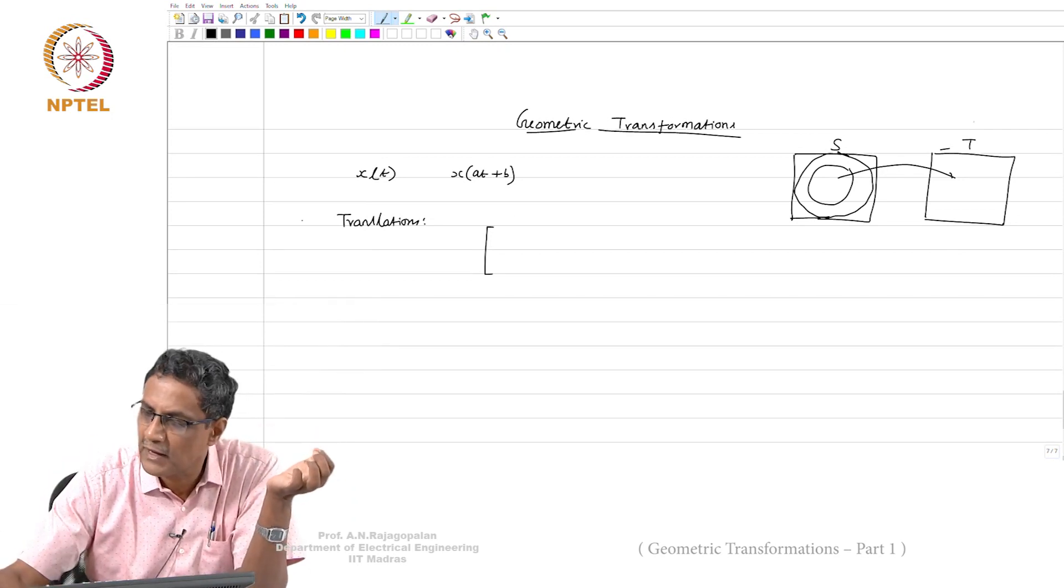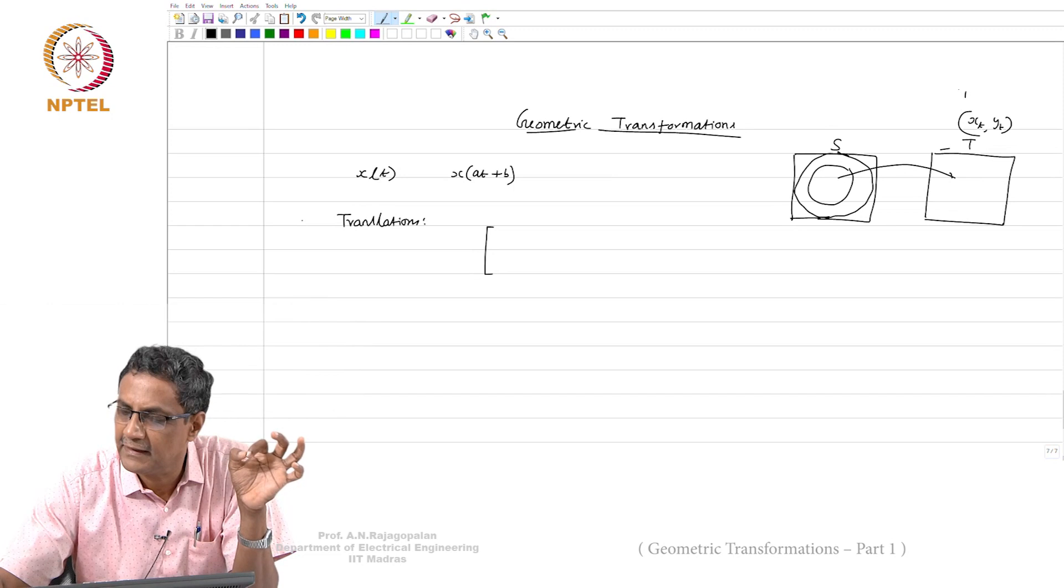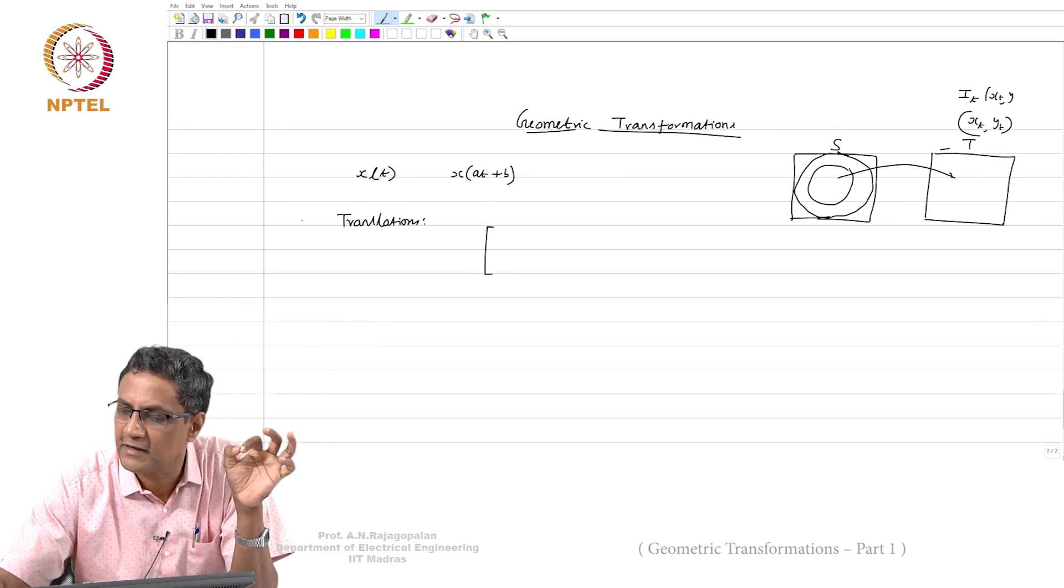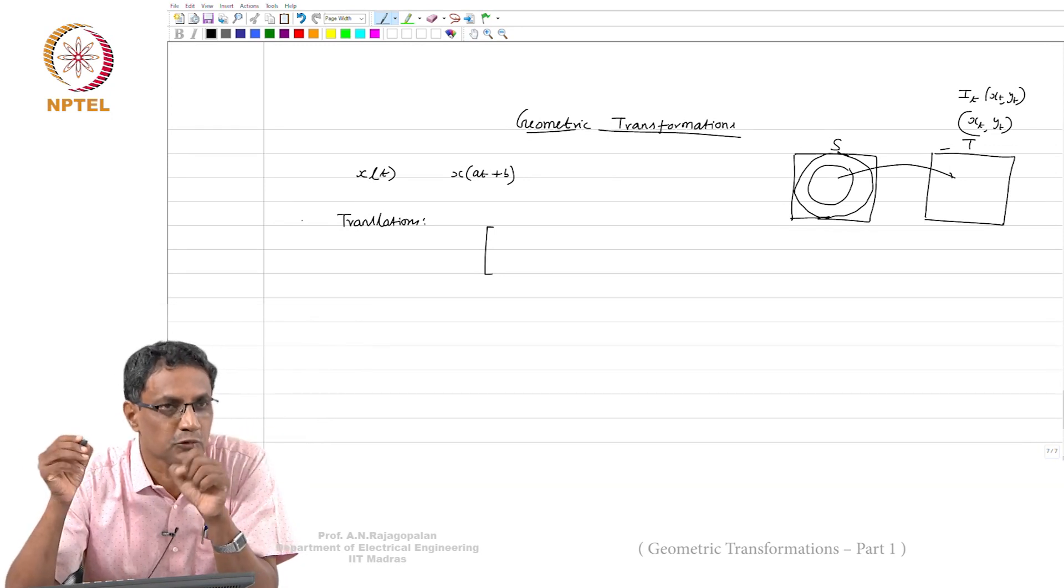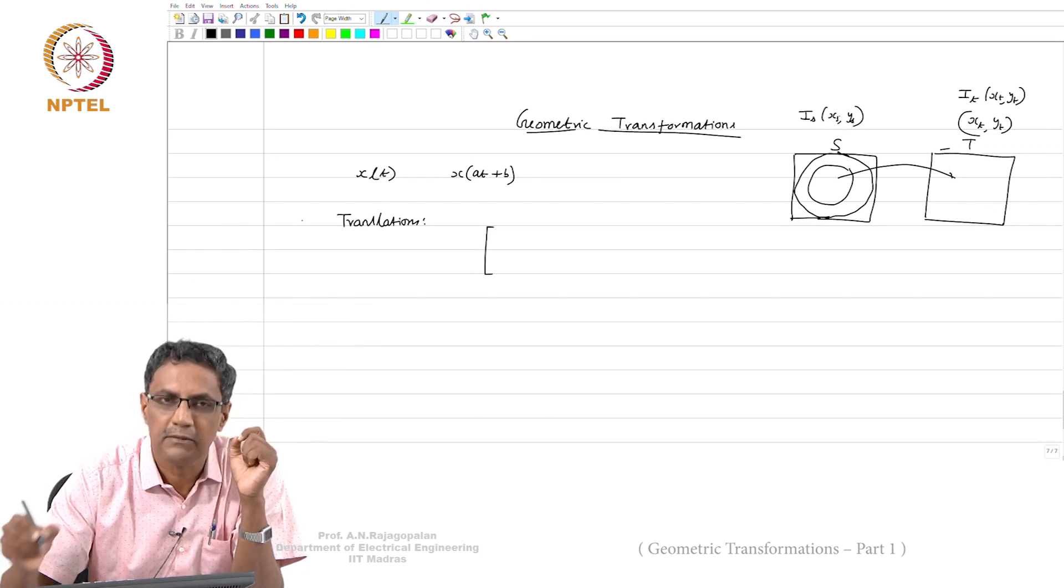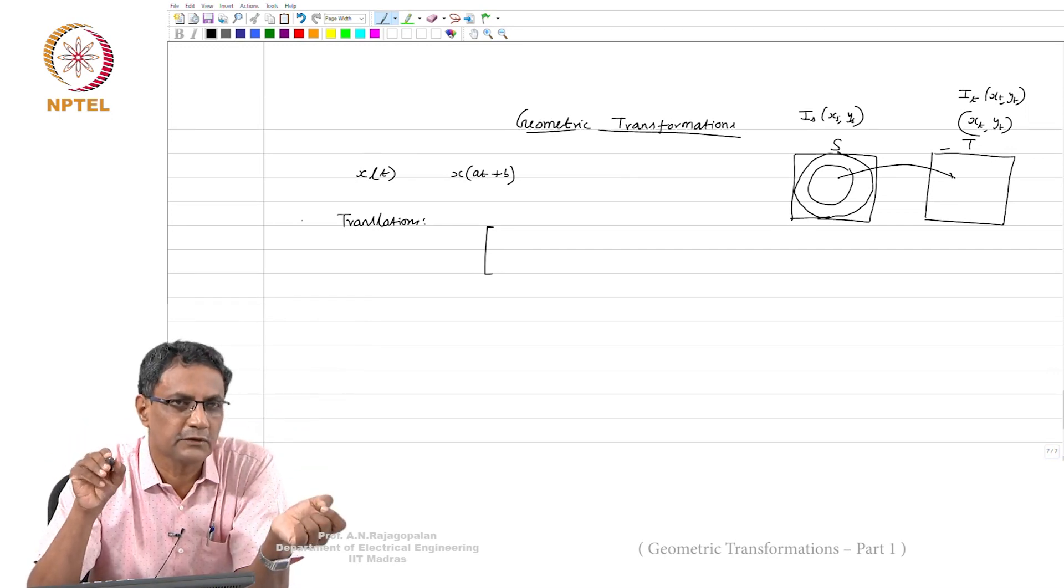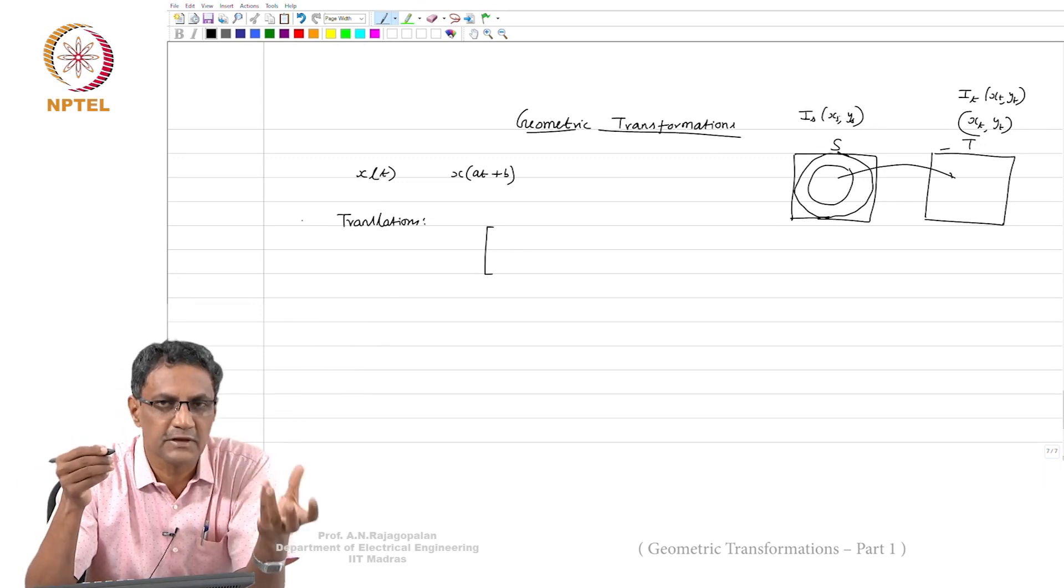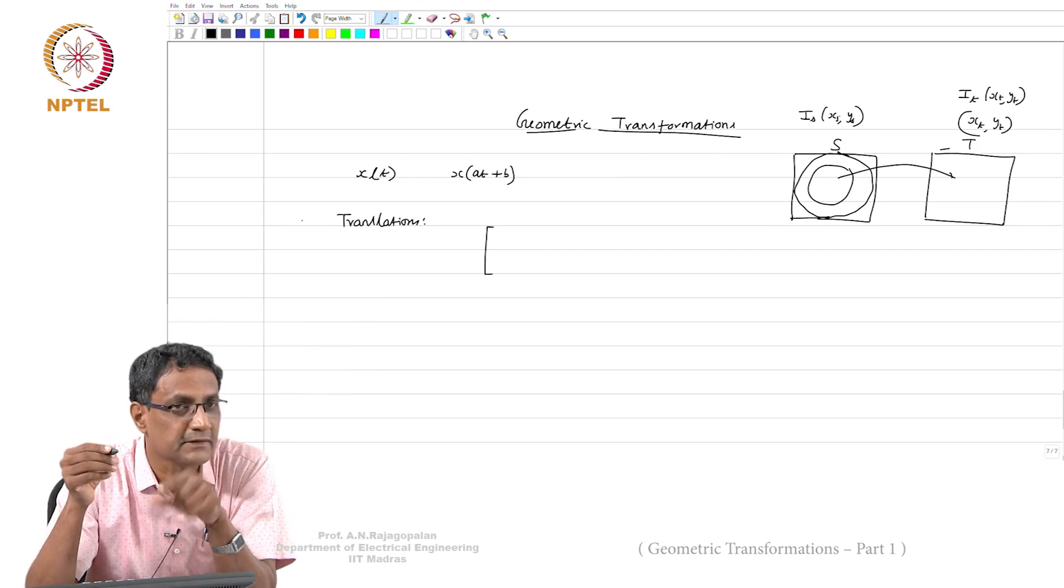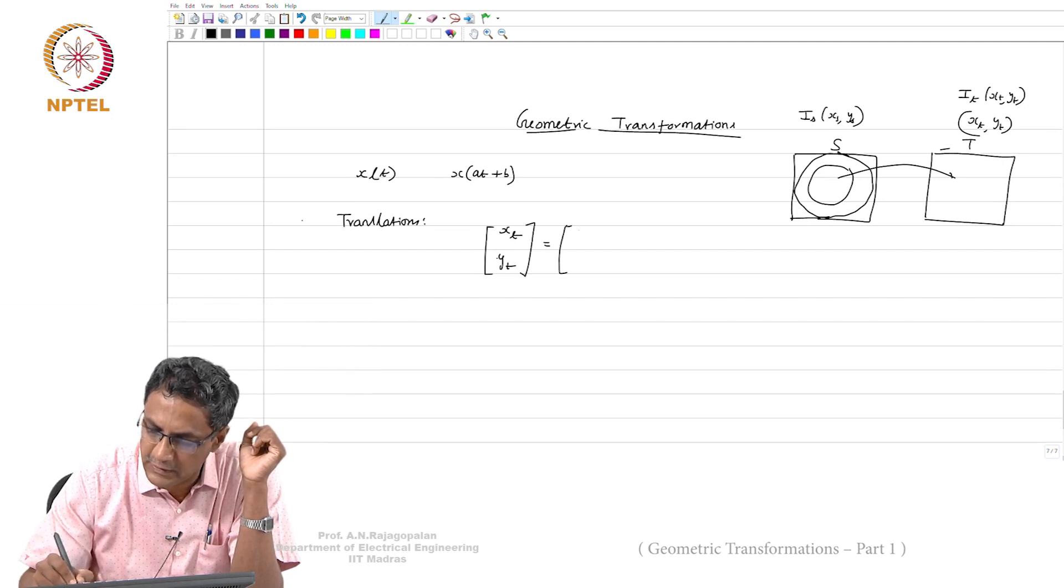So in a translation, if you have target coordinates xt, yt, these are the spatial coordinates. This is not the intensity. The intensity i_t at xt, yt will tell you what is the intensity in the target image at that location. Given that you have a source image wherein all intensities are available at xs, ys. What you are asking is a transformation when you do xt, yt equal to xs, ys. Suppose you wanted to translate an image, you will say plus some tx, ty.